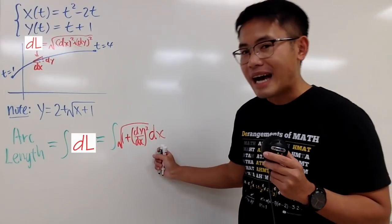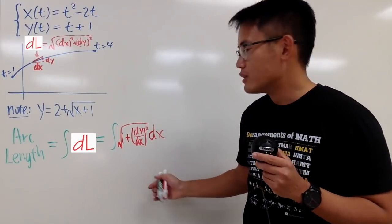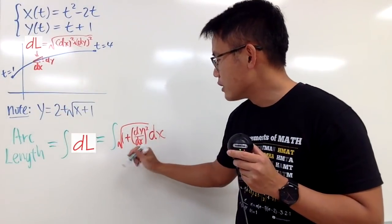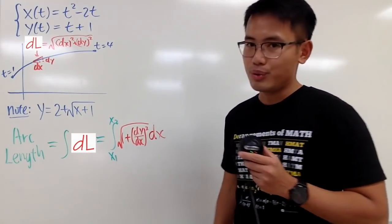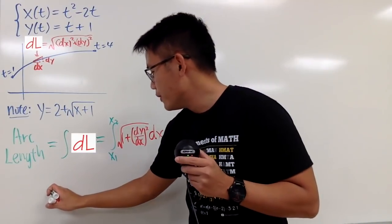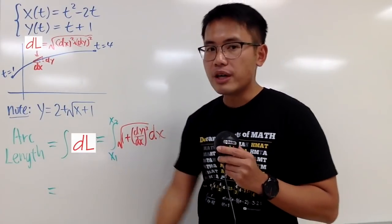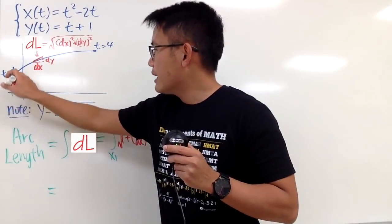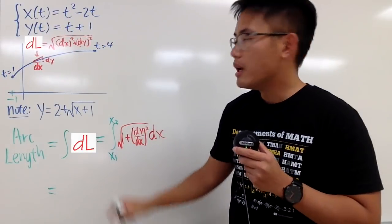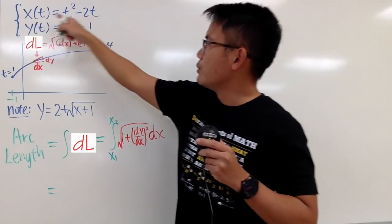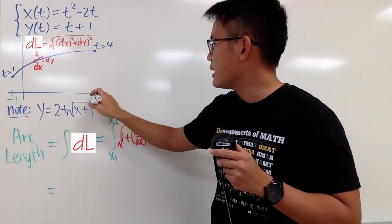When you do that, you will be in the x world. So you pay attention to the x values. We need to go from x1 to x2, the x values. If you want to figure out the arc lengths in our situation, right here, the x value is negative 1, plugging 1 into all the t's in the x equation. And then when you plug in 4 into the x equation, you get 8.